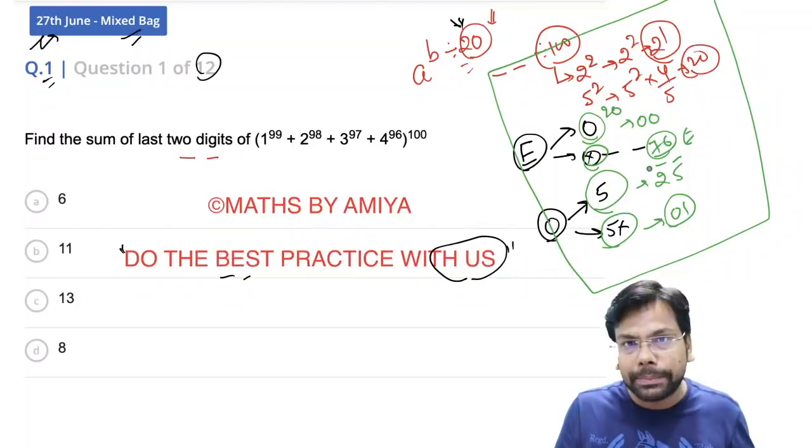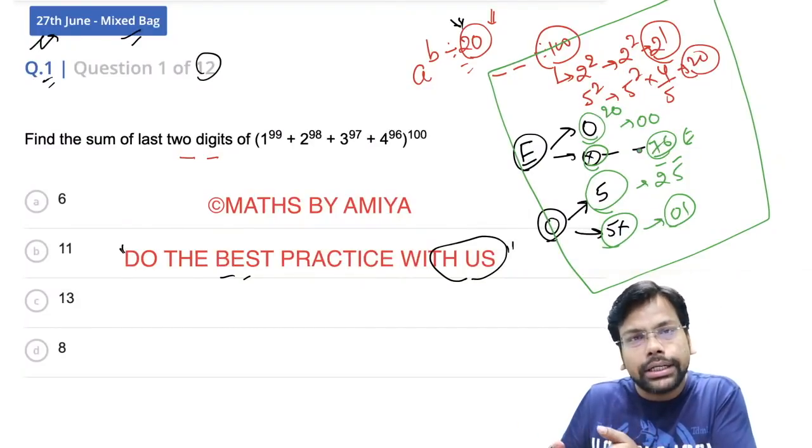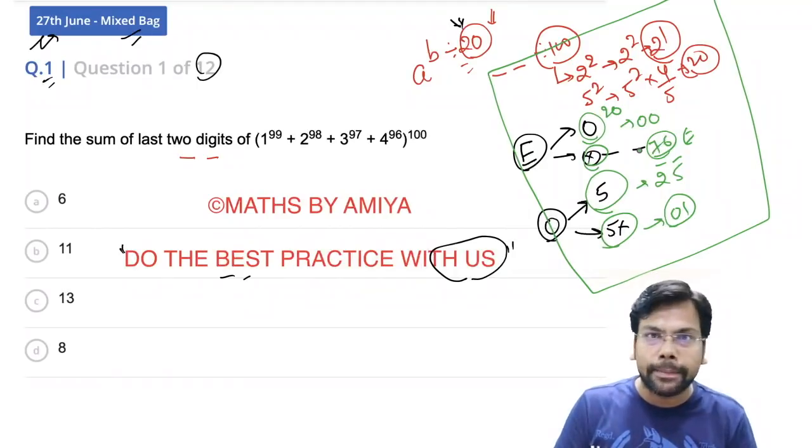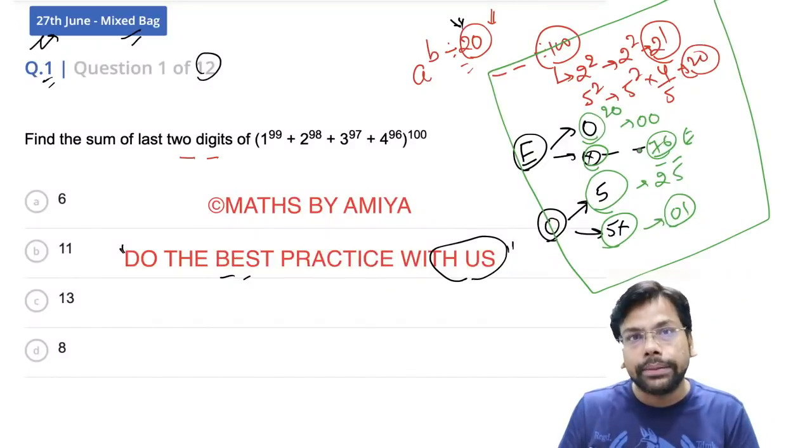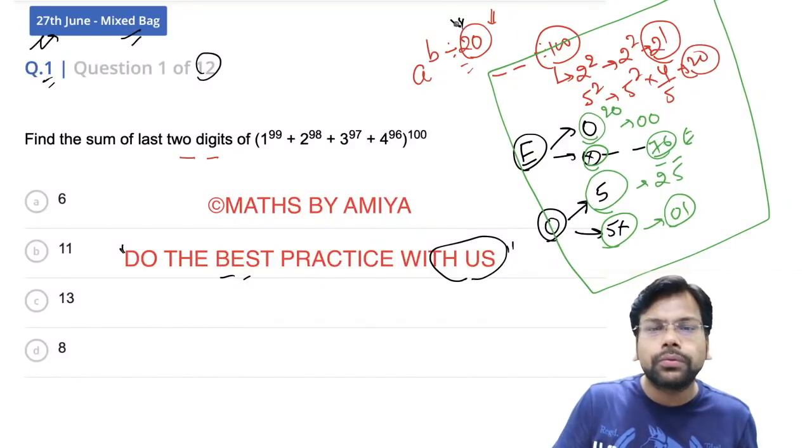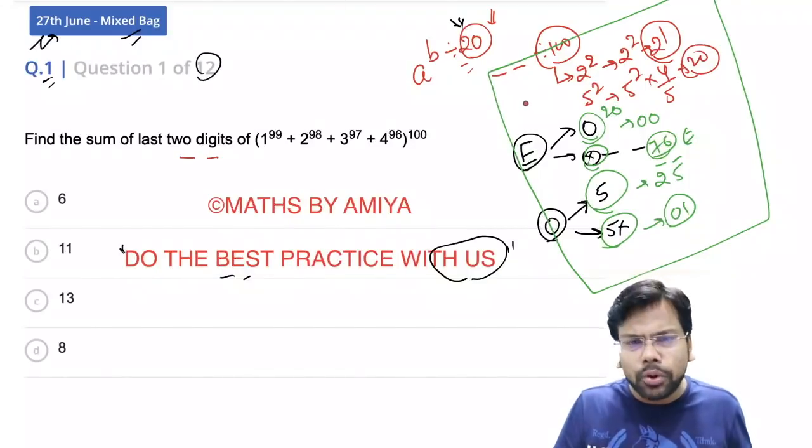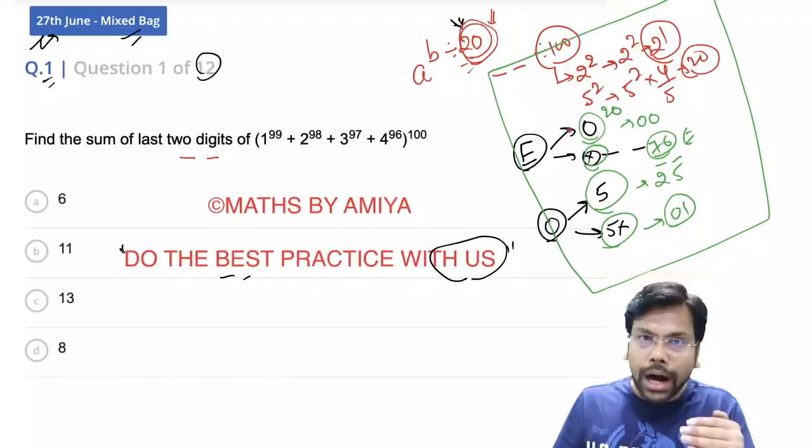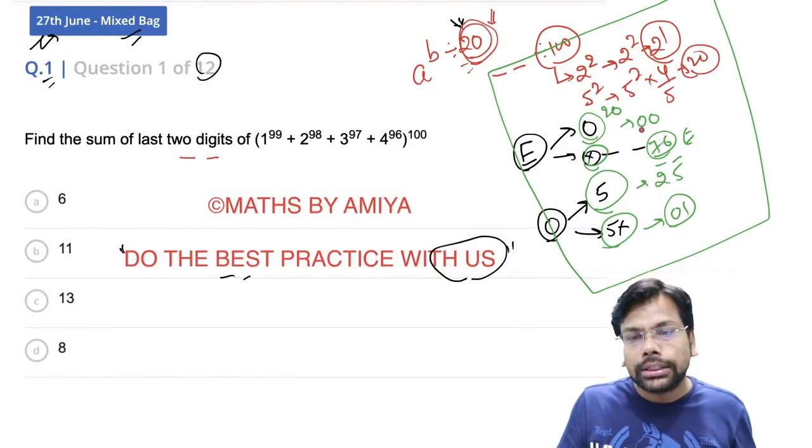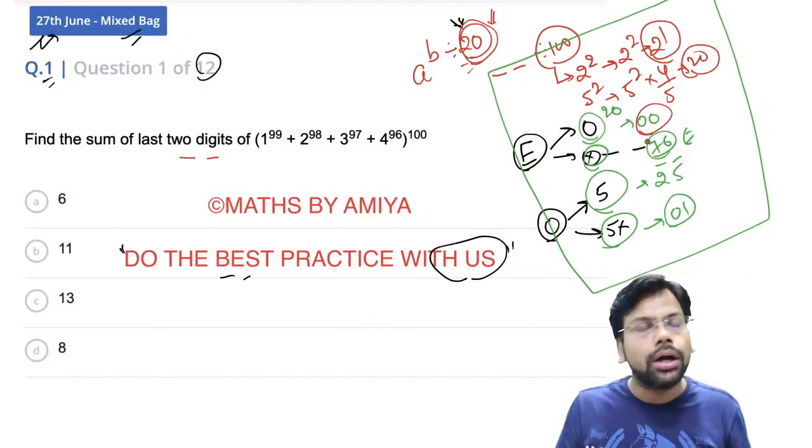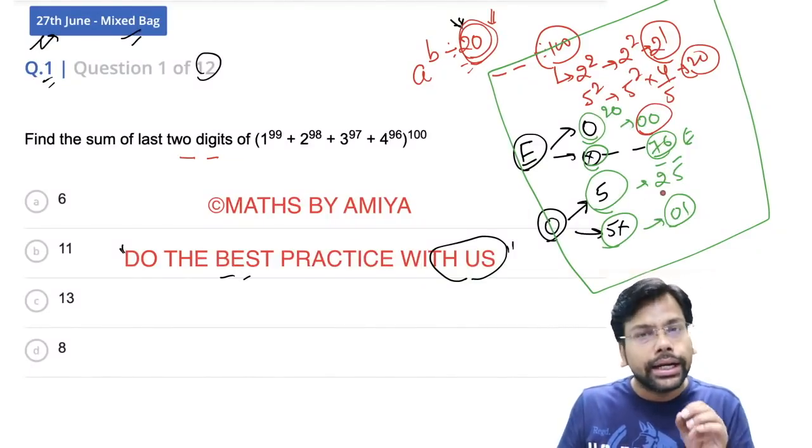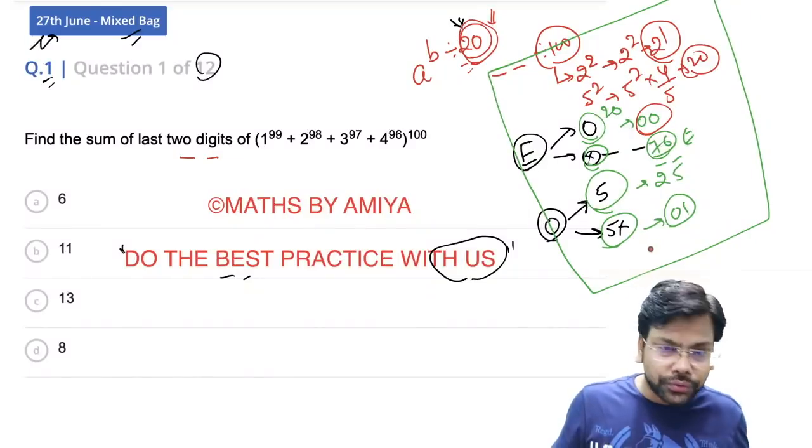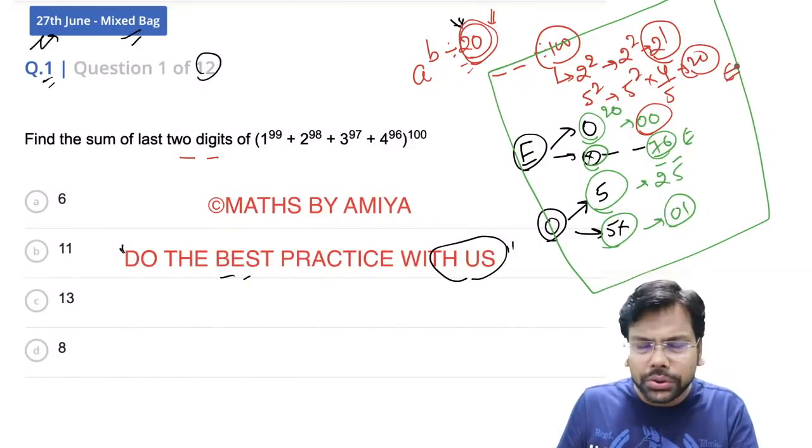You should know these things. We learn all these things in the concept classes. So you must know four things before solving the question: the cyclicity of last two digits is 20. If the power is 20, it will be 00, 76 if it's even, 25 if ending with 5, and 01 if odd. So first of all, you must know this. Now, what is this?